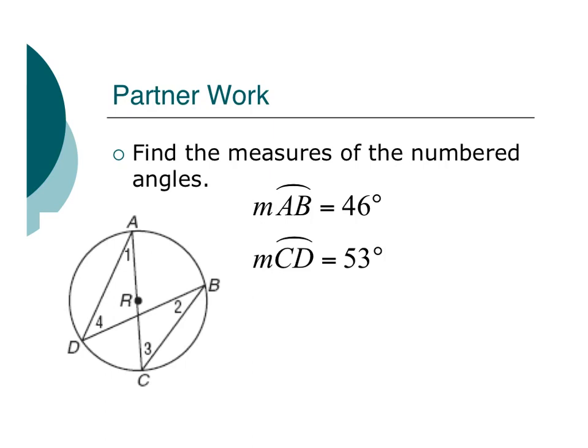Alright, so find the measures of the numbered angles. And I've been given a little bit of information here. Arc AB is 46 and Arc CD is 53.